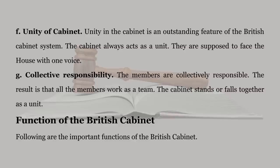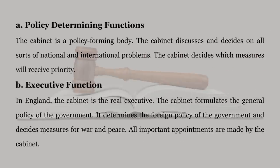G. Collective Responsibility: The members are collectively responsible. The result is that all the members work as a team. The Cabinet stands or falls together as a unit. Functions of the British Cabinet: The following are the important functions of the British Cabinet. A. Policy Determining Functions: The Cabinet is a policy-forming body. The Cabinet discusses and decides on all sorts of national and international problems. The Cabinet decides which measures will receive priority.